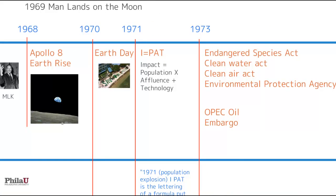Apollo 8 — the astronauts on board took the first picture of the Earth from outside. It was the first time we had ever seen the Earth as an object floating in space. That was transformational in thinking about the Earth as an ecosystem or as a complete biological entity. It wasn't long before the first Earth Day was celebrated in 1970, and it continues to be celebrated around the world now.